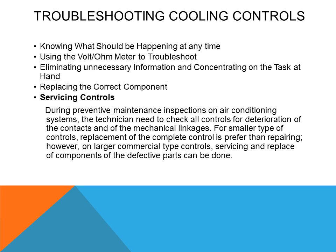During preventive maintenance inspections, controls on air conditioning systems need to be checked. The technician needs to check all components and controls for deterioration of the contacts or the mechanical linkages. For smaller type controls, replacement of the complete control is preferred over repairing. However, on larger commercial type controls, servicing and replacement of components or parts of the equipment is feasible.